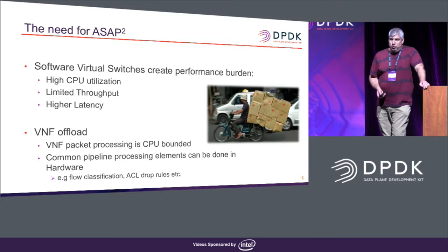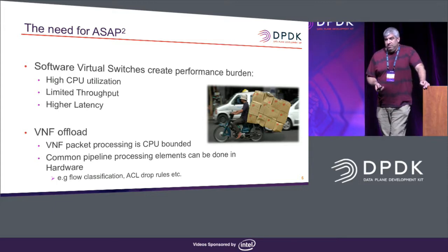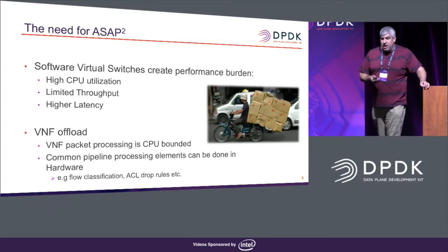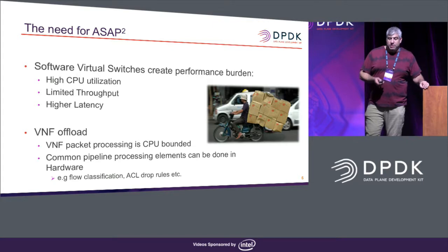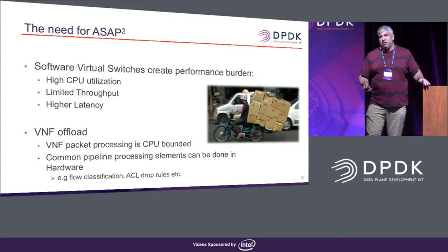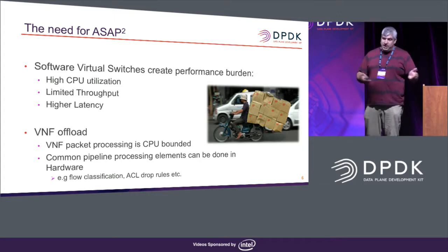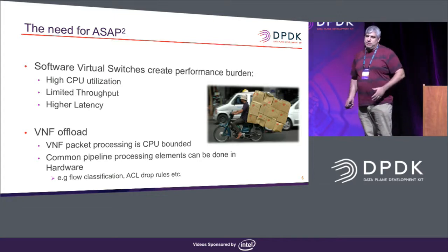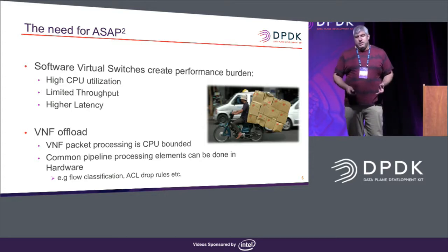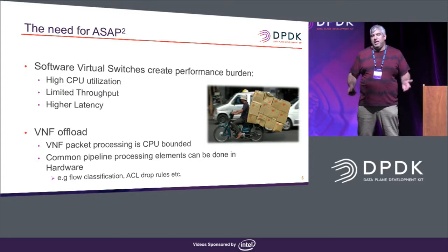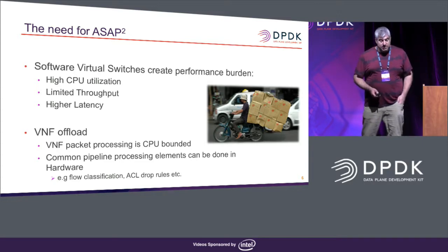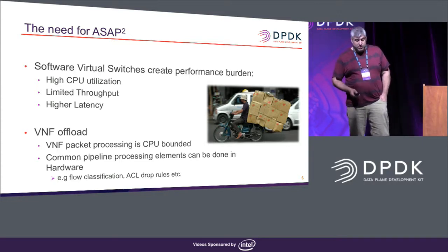When you assign a virtual function to a virtual machine, the PMD running there can consume hardware offload. It's not using a VIRTIO interface, which is a software one — it can actually consume hardware acceleration from the hardware. If the hardware can support RTE flow to drop packets, do classification, or whatever, this is what a VNF needs to offload. It can also create a performance boost for VNFs.